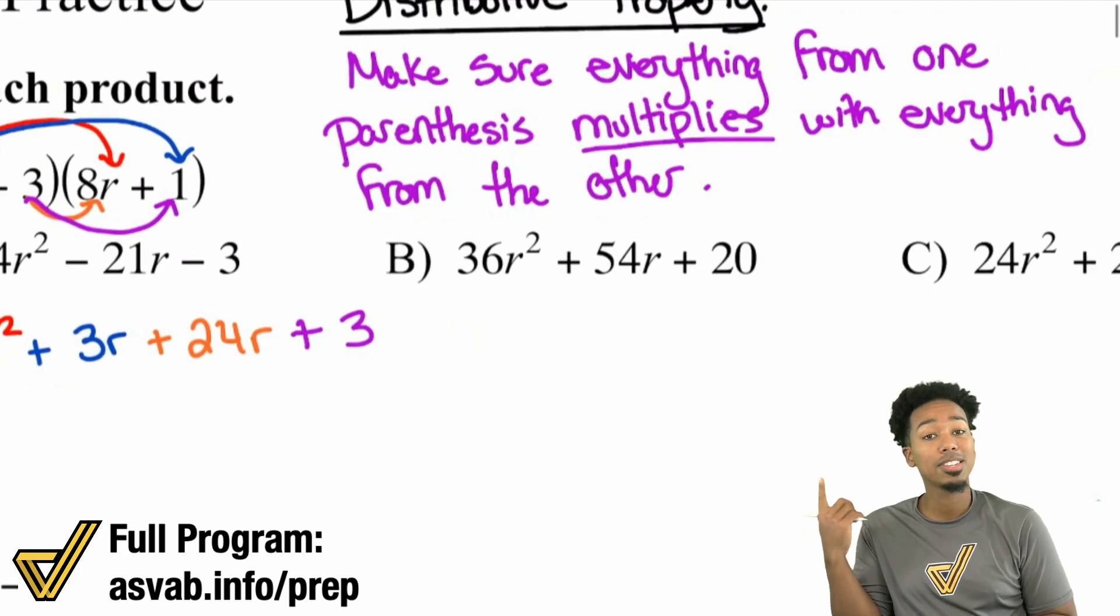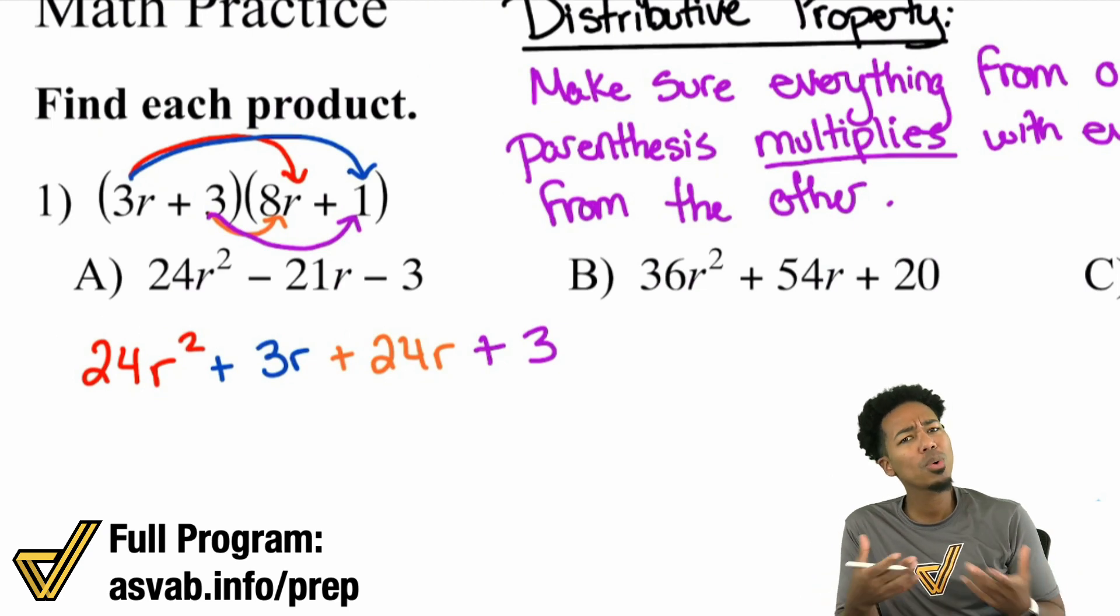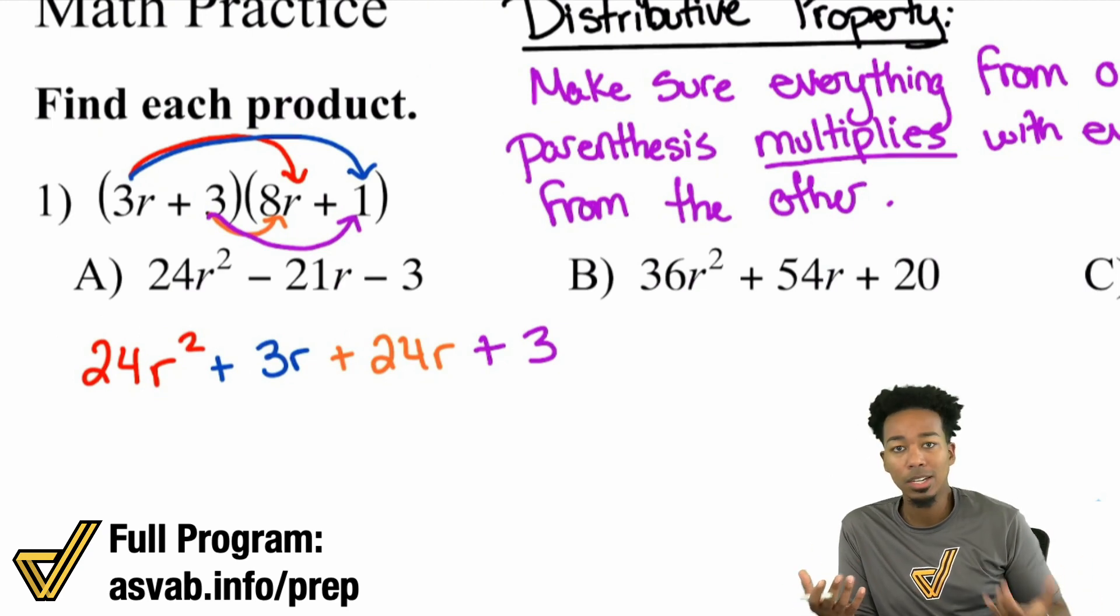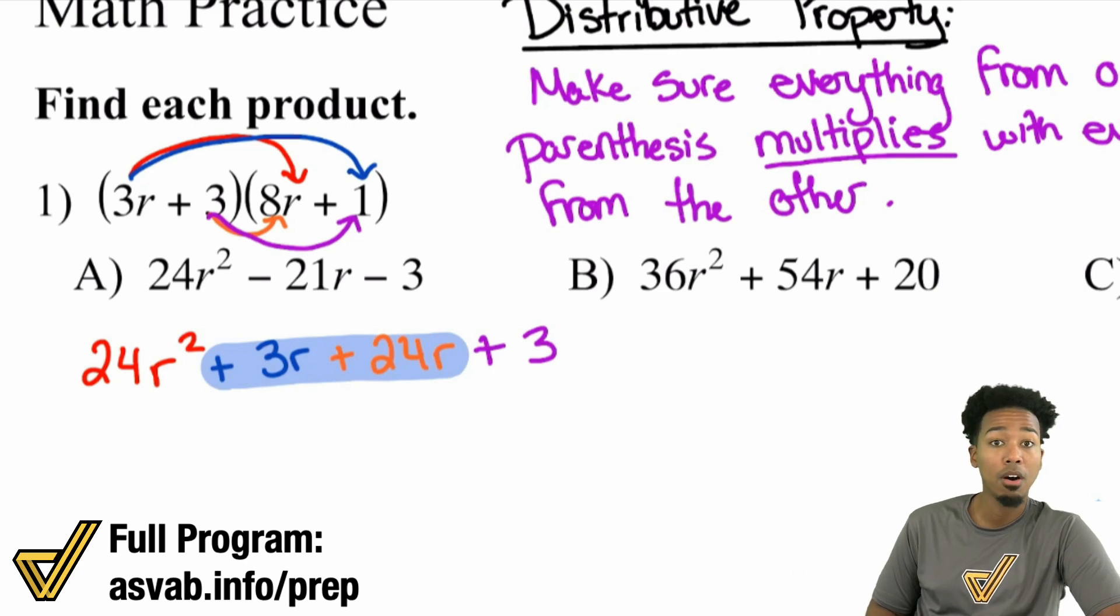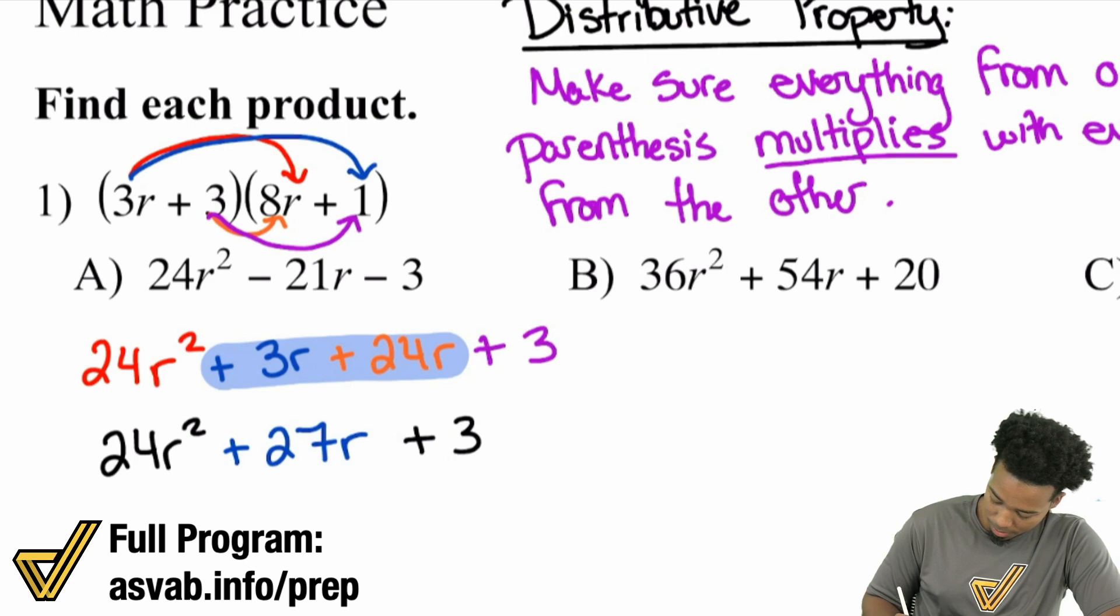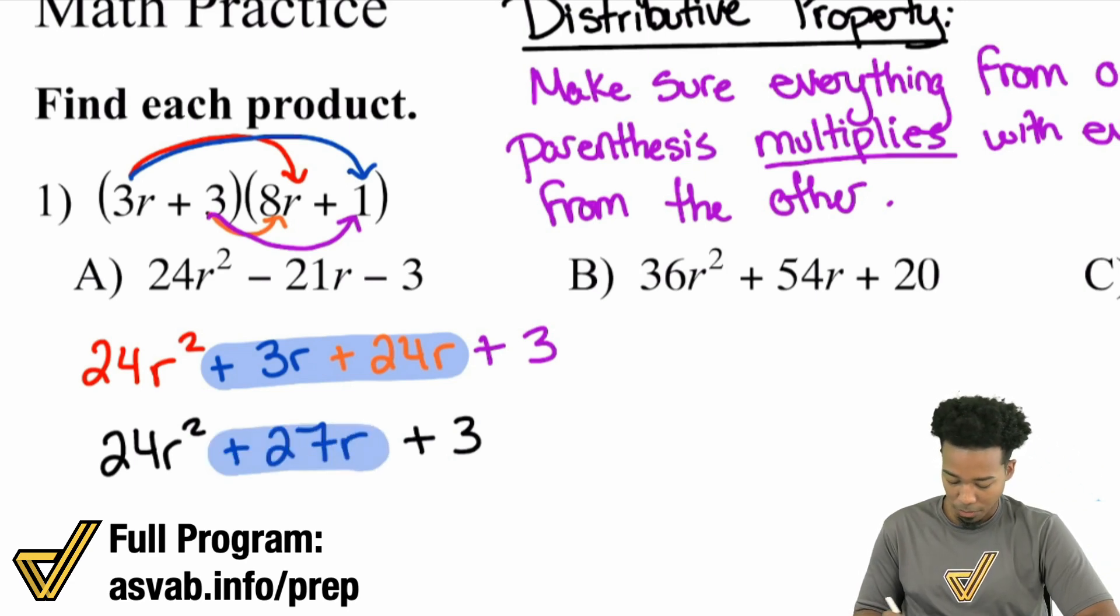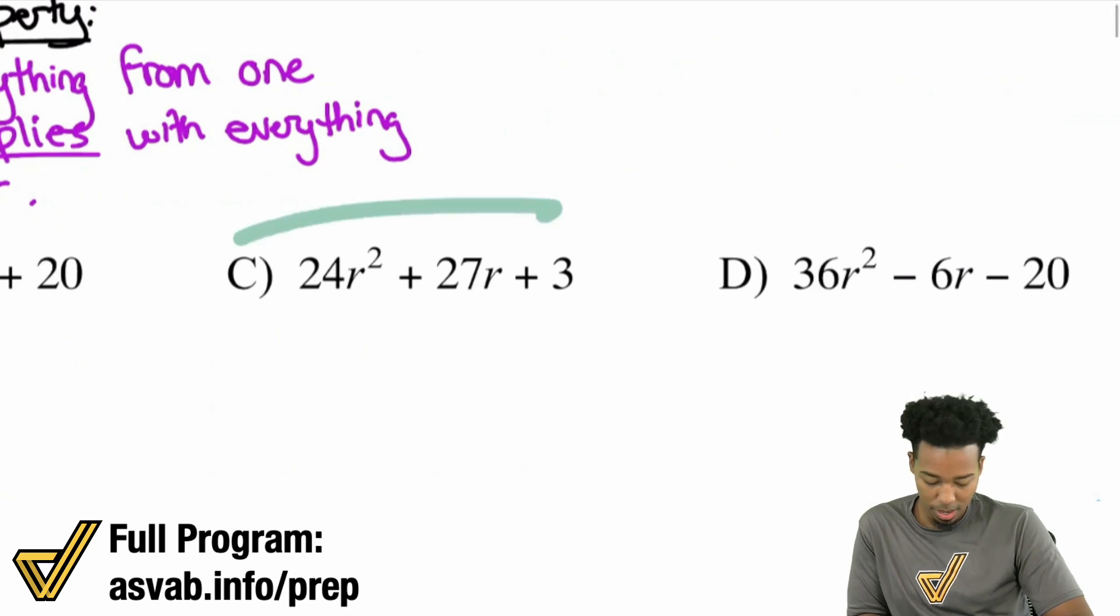Again, that's the main idea. Make sure that everything from one parenthesis multiplies with everything from the other. So here, after that, you always need to check whether you have any like terms that you can combine. What I noticed is that we do have that right here. Positive 3R and positive 24R, they both have R. Same variable, same exponent. We can combine those. So our final answer is going to be 24R squared. 3 plus 24 is 27R. And then we have the plus 3 at the end. So our final answer will be 24R squared plus 27R plus 3. That's going to be right there, C. And we're done.